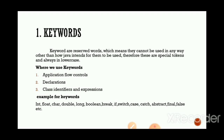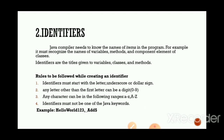Now we will start with the second token type: identifiers. The Java compiler needs to know the names of items in the program — for example, it must recognize the names of variables, methods, and component elements of classes. Identifiers are the titles or names given to variables, classes, and methods.